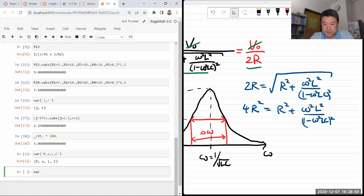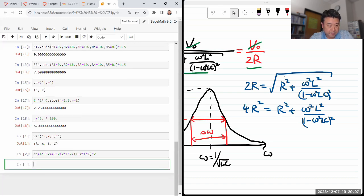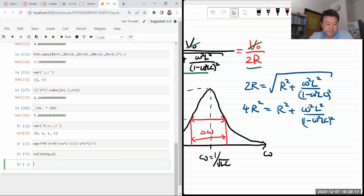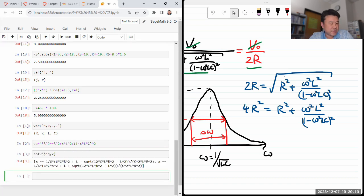And I need L and I need C. Those are my variables. And my equation will be 4 times R squared is equal to R squared plus X times L squared divided by 1 minus X times L times C squared. I can solve for that equation for X, and it'll know to treat everything else as a known quantity.